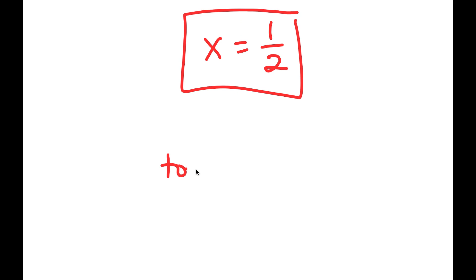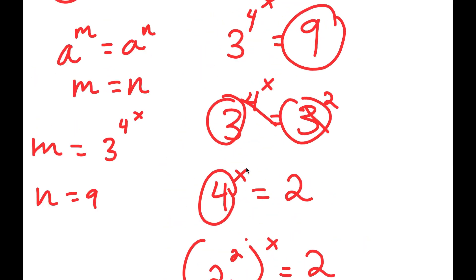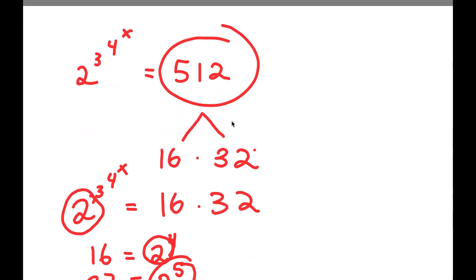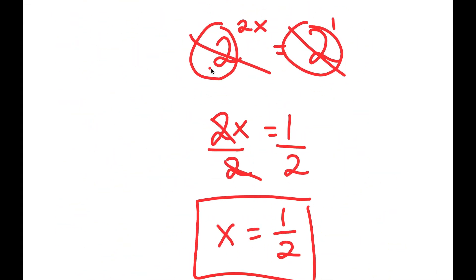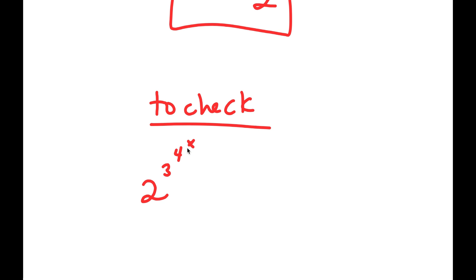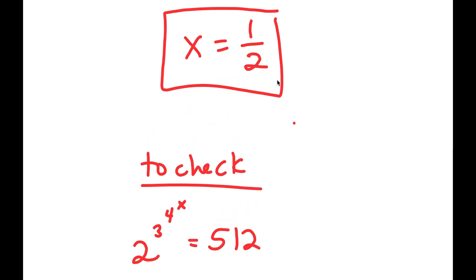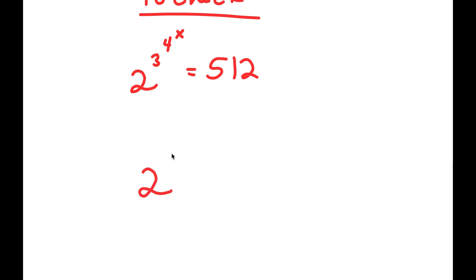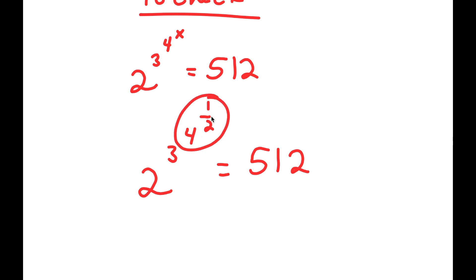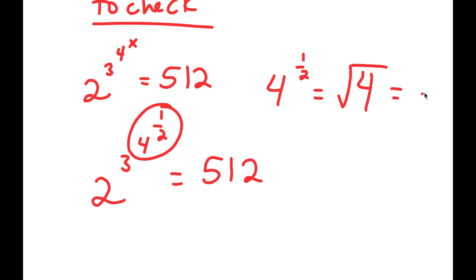So now, to check: my original equation was 2 to the power of 3 to the power of 4 to the power of x is equal to 512. We said that x is equal to 1 half, so I have 2 to the power of 3 to the power of 4 to the power of 1 half is equal to 512. I'm going to work my way down from the top. I first start with 4 to the power of 1 half, which is the same thing as the square root of 4, and the square root of 4 is equal to 2.